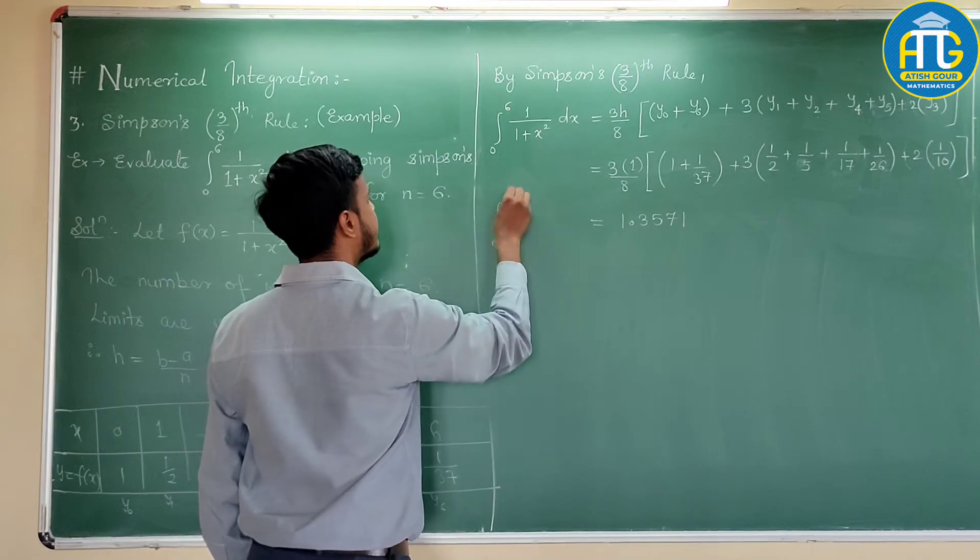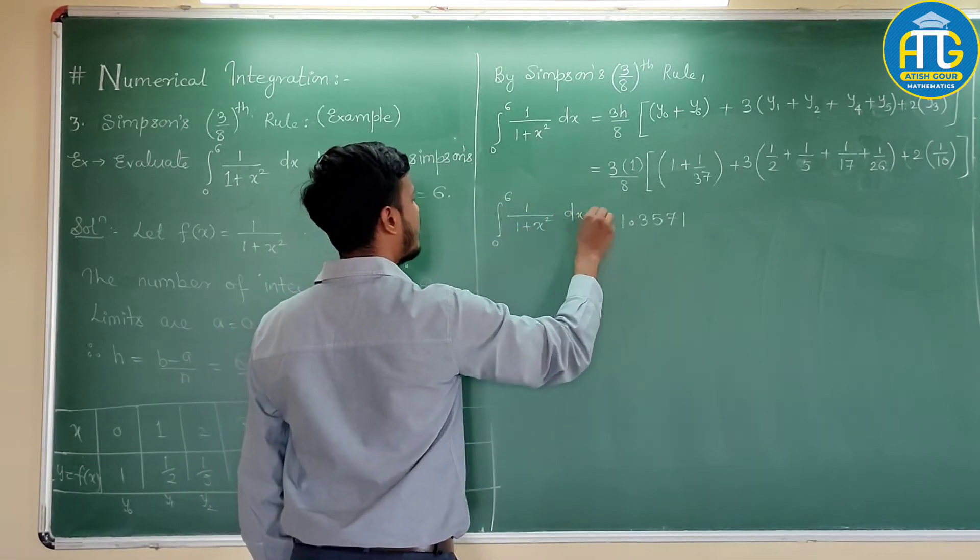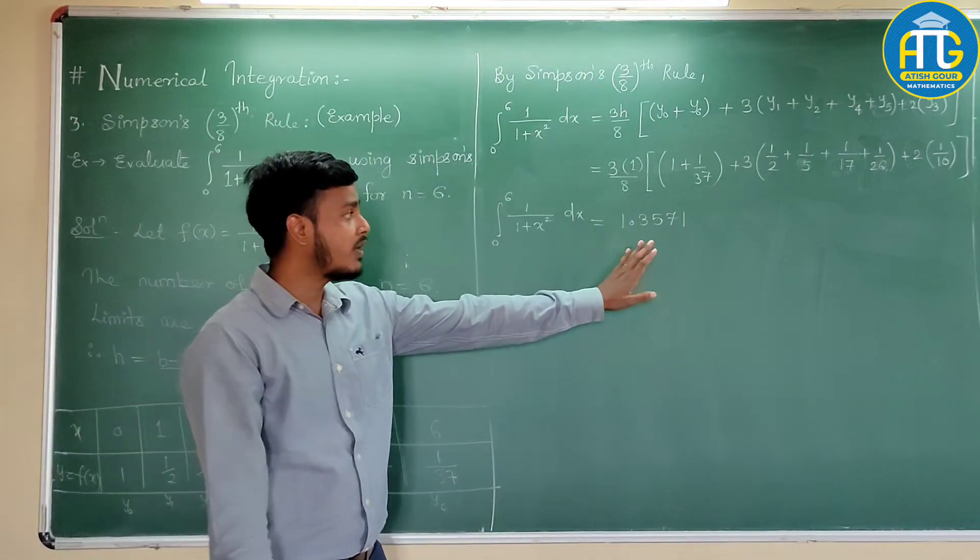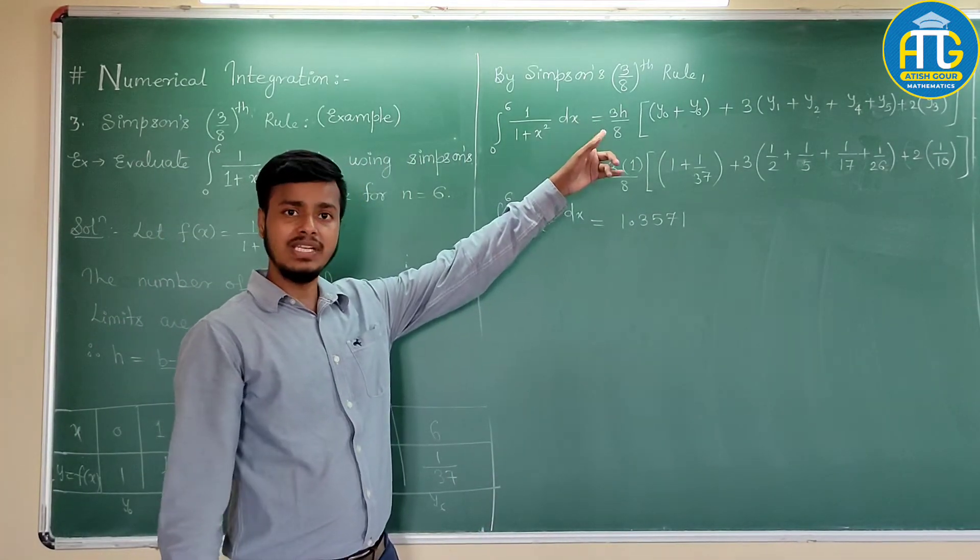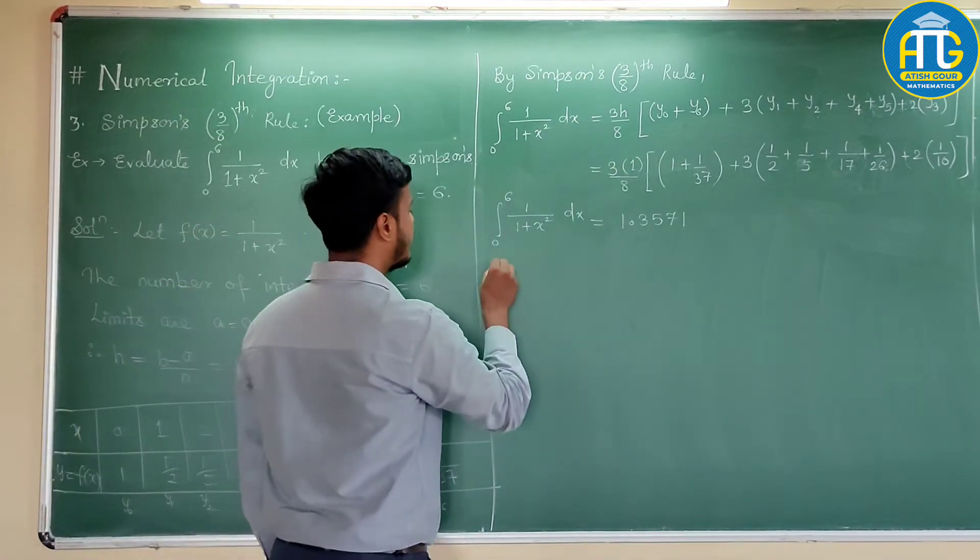This is nothing but the integration of 1 upon 1 plus x squared dx from limit 0 to 6. So, this answer we got with the help of 3/8 rule. Let us apply 1/3 rule, one third rule.